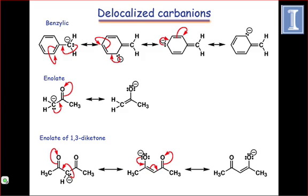Delocalization stabilizes negative charges for the same reason it stabilized positive charges — it spreads charge out. Delocalization into electronegative atoms, such as oxygen, is more favorable than delocalization into less electronegative atoms. This is why ketones, for instance, are more acidic than allyl groups.